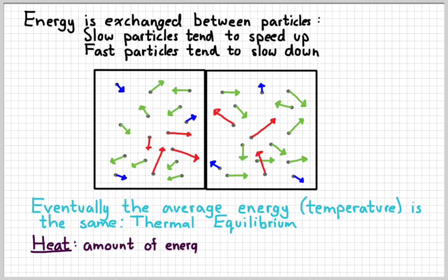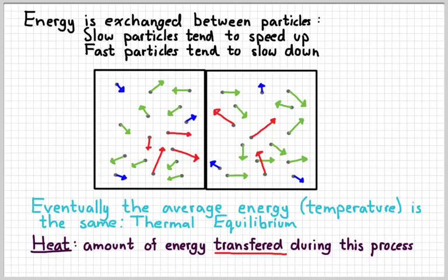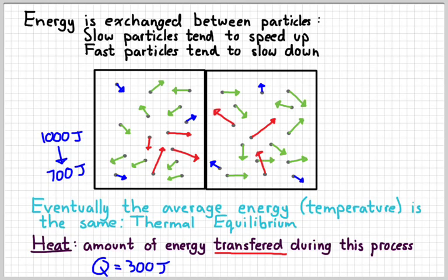Remember that heat refers to the amount of energy that is transferred during this process. So if we went from, for instance, the left hand sample having 1,000 joules of energy, and then end up having 700 joules of energy after it reached thermal equilibrium, then the amount of heat that was transferred would be 300 joules. So remember, heat is the amount of energy that is actually transferred.